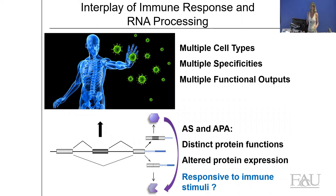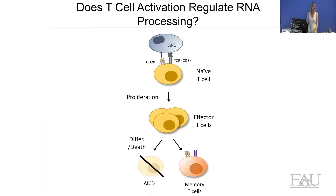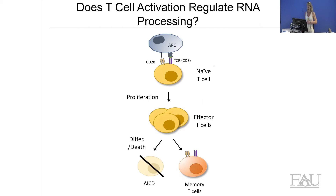The first question we really wanted to ask was: are the processes of alternative splicing and alternative polyadenylation sensitive to and changing in response to immune stimuli? We've done this over the years in a number of different ways, and as technology has improved our numbers have improved, but the bottom line is the same — yes, both of these systems respond, which is why I'm up here talking. The system we've done a lot of work in is T-cell activation.